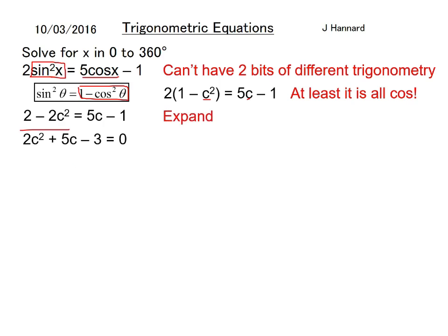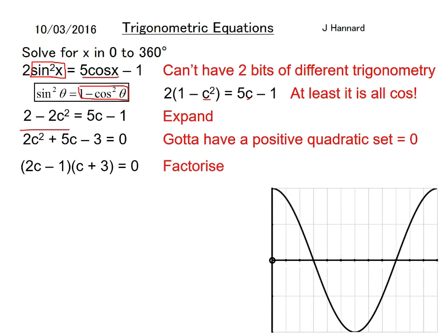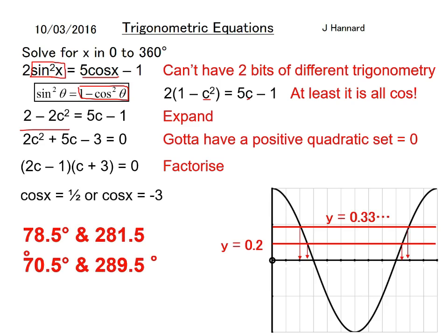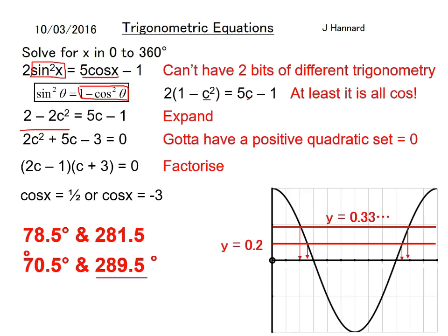Tidy it up like that: 2c² plus 5c minus 3 equals zero. Solve the quadratic, I think it factorizes. It does, so c equals a half or c equals minus 3. There you go, there's the y equals 0.5 line. The four solutions: remember you take off 360 for this one.